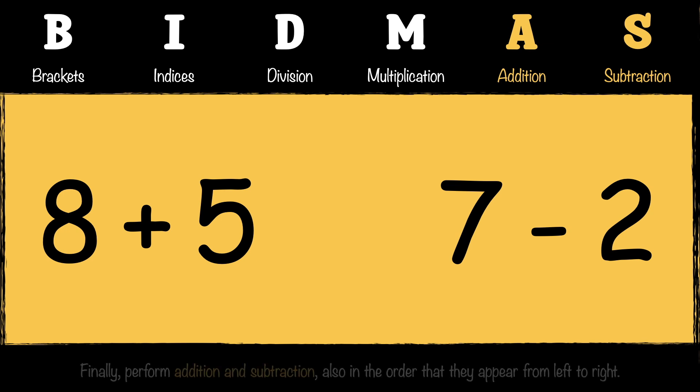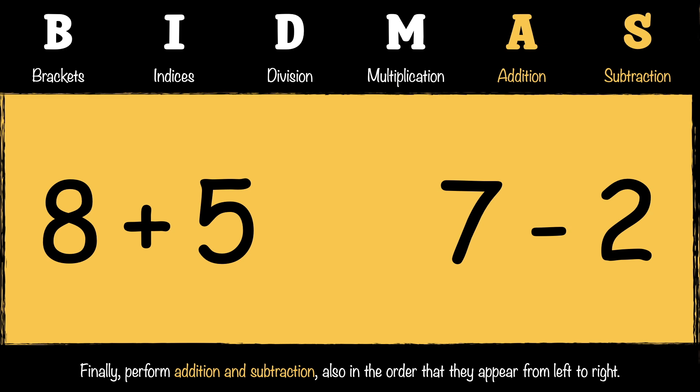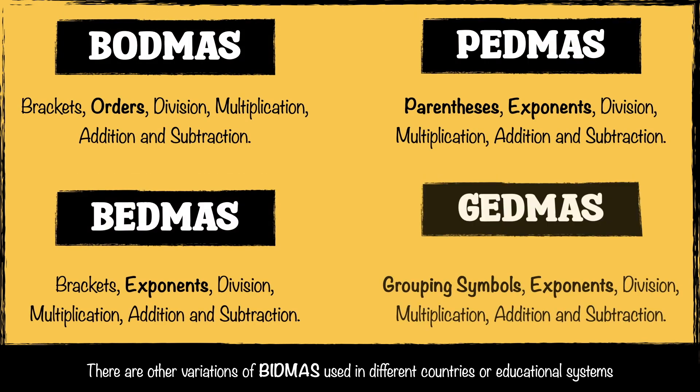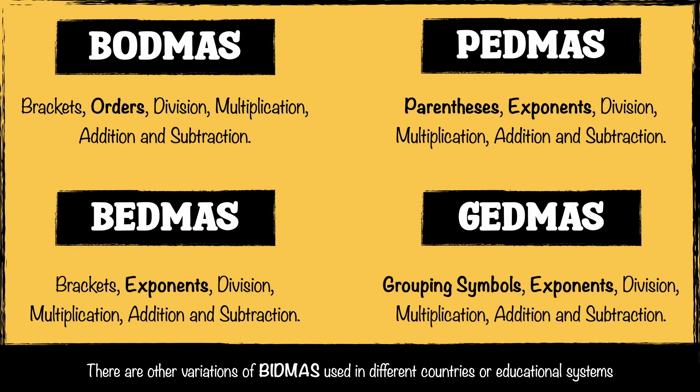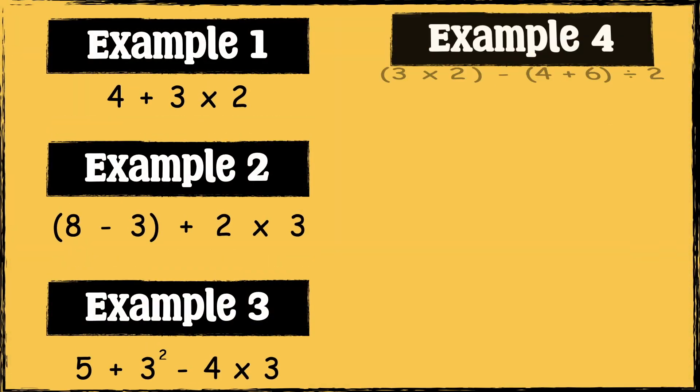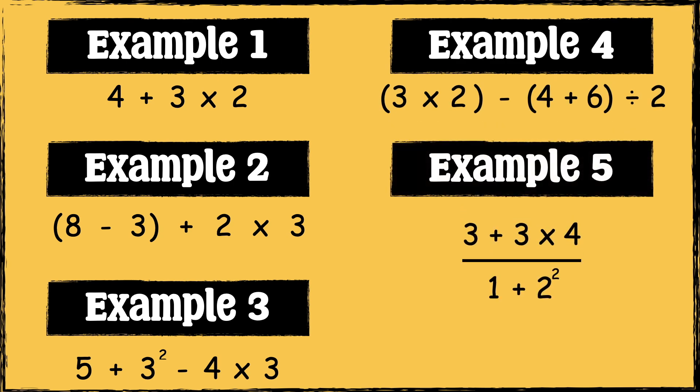Here are some other variations of BIDMAS which are used in different countries or different educational systems. All of these variations have the same order of operations — they just have a different way of saying it. To remember the order, I'm going to work through five examples, starting simple and increasing the difficulty as we go along. If you'd like to have a go at these examples yourself before we go through them, pause the video and press play when you're ready.